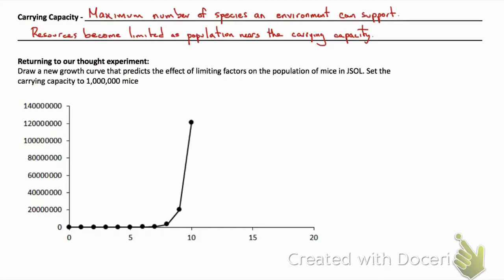You'll note this is the same graph, I've just added another 10 generations onto it. What we're going to do is set our carrying capacity to 100 million mice. What we're saying here is that within JSOL there can be no more than 100 million mice that can be stably supported by the ecosystem.